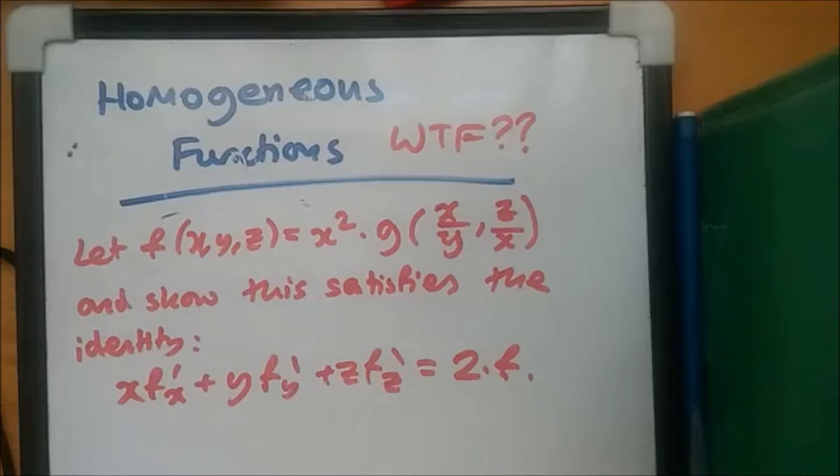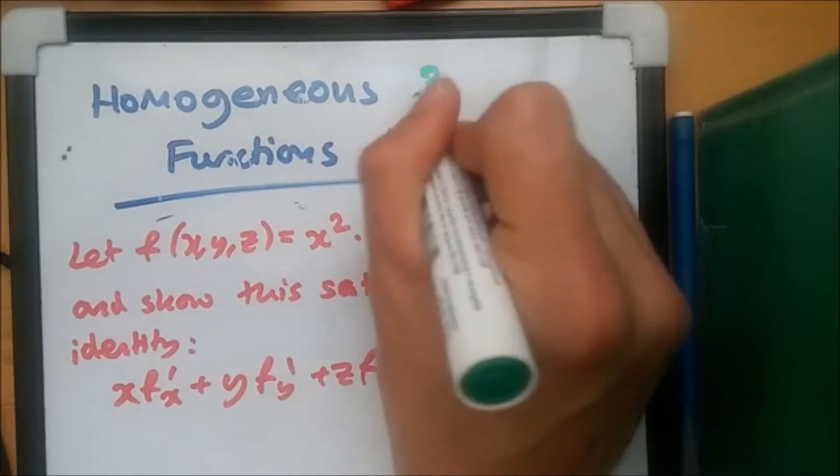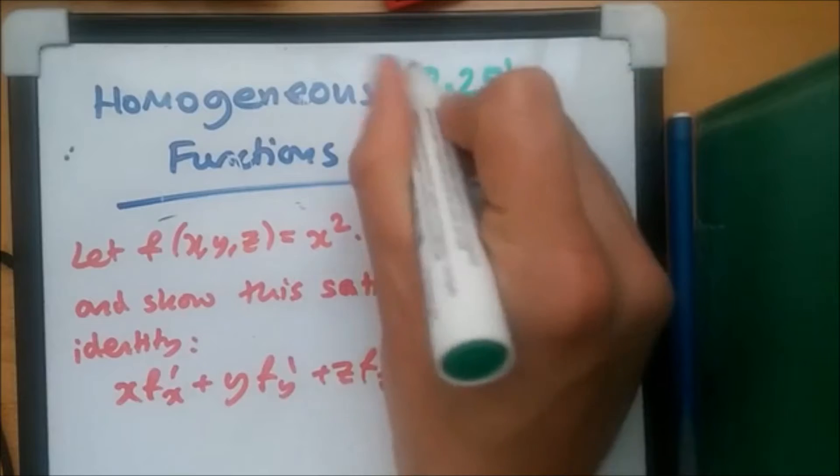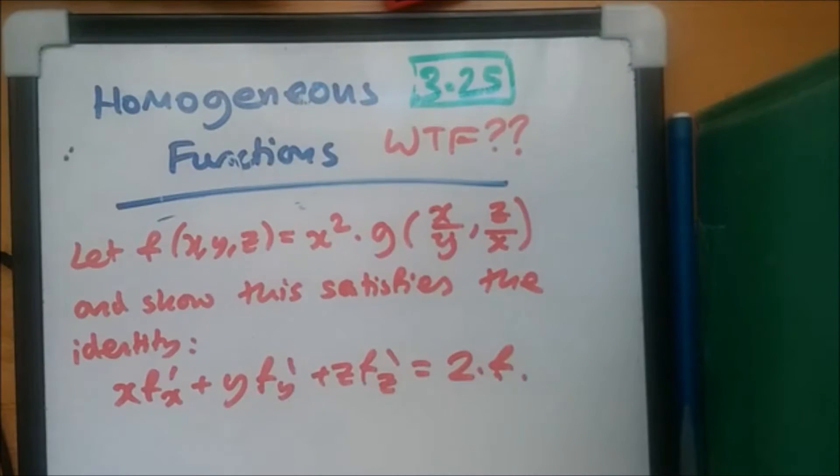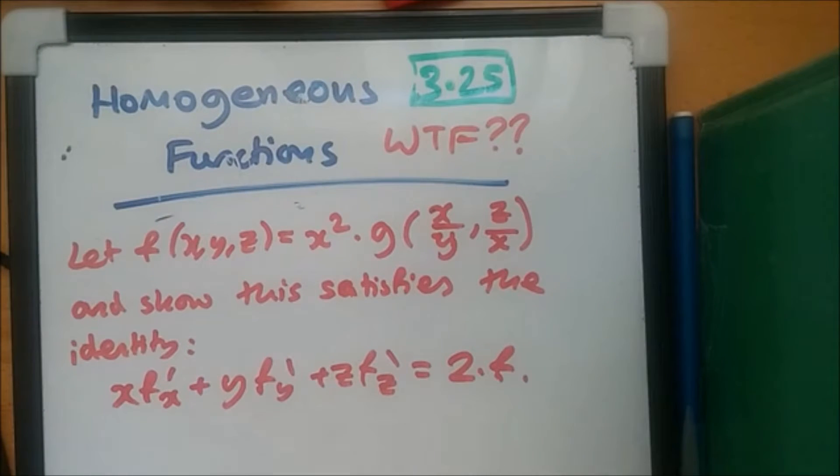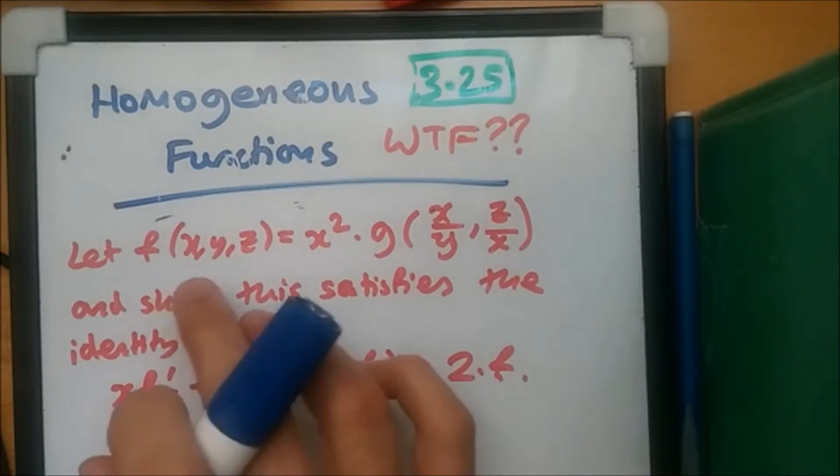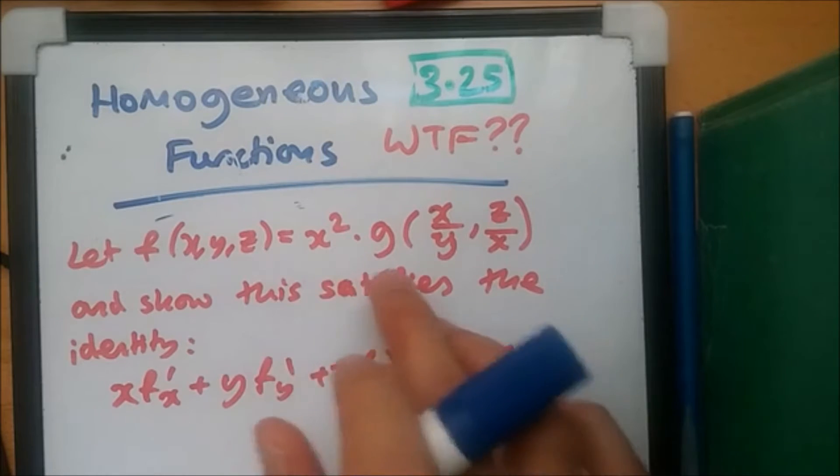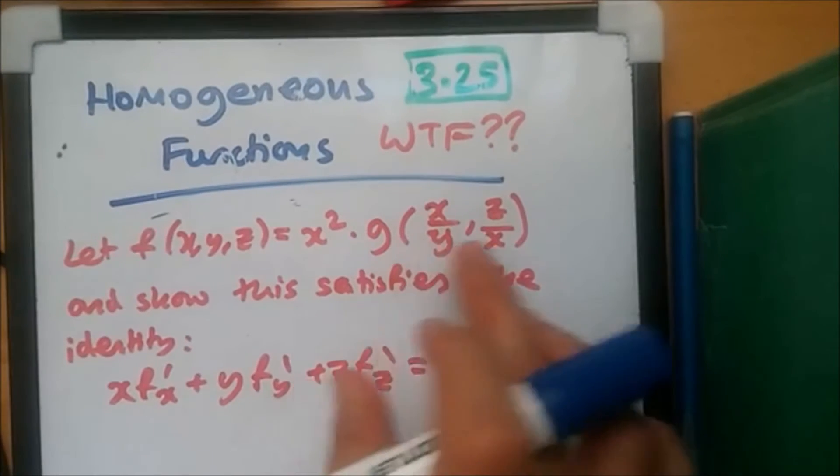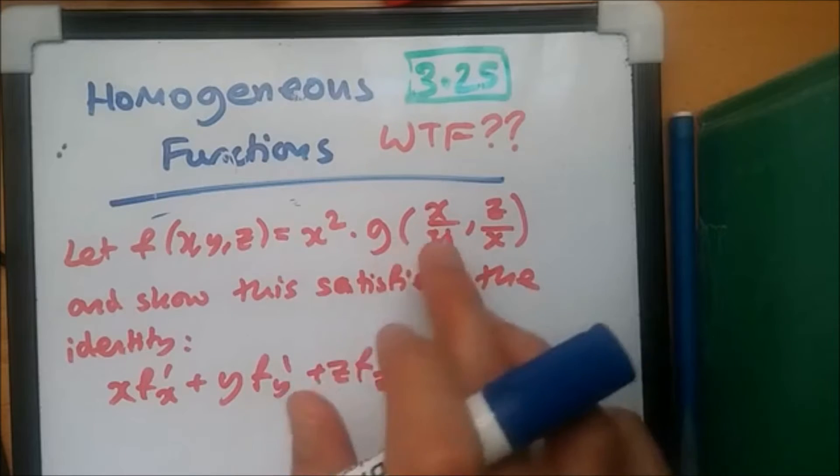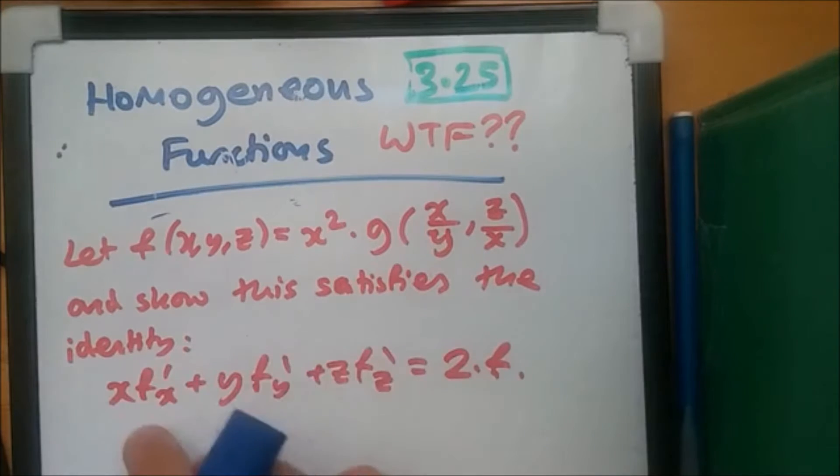So here's a question. And this question came from exercise 3.25 of ESEG's materials. So the question tells us that let the function of three variables equal x squared times another function g. So this is a function. We'll learn how to deal with this and show that this satisfies the identity.